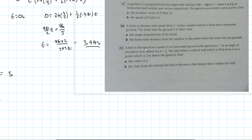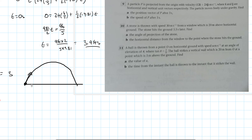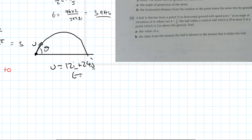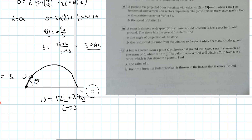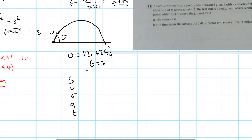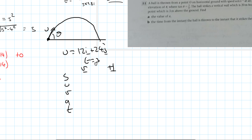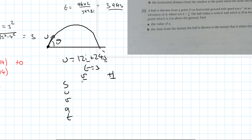Question 9: A particle is projected from the origin with velocity 12i + 24j m/s, where i and j are horizontal and vertical unit vectors respectively. The particle moves freely under gravity. We need to find the position of P after 3 seconds and the speed of P after 3 seconds. Writing SUVAT: vertical U = 24 (j component), a = −9.81, t = 3; horizontal U = 12 (i component), a = 0, t = 3.